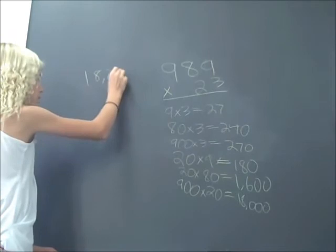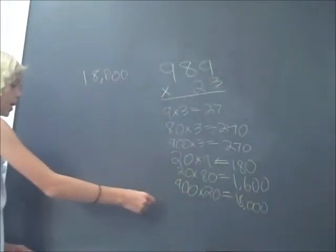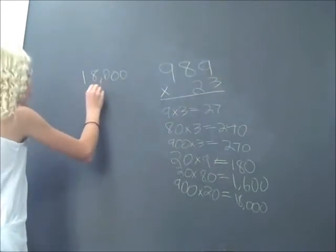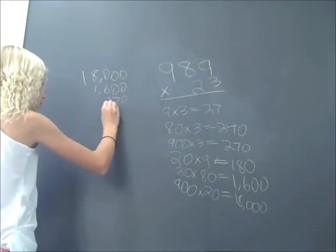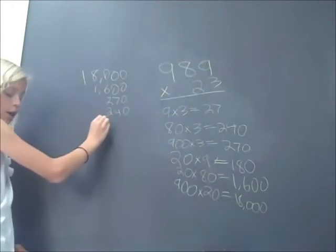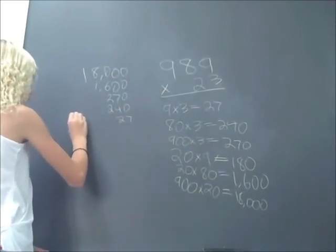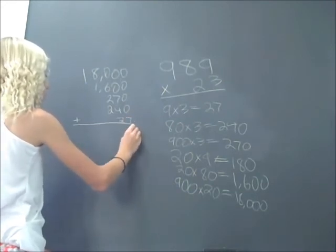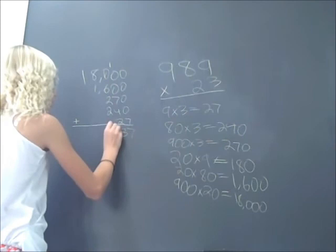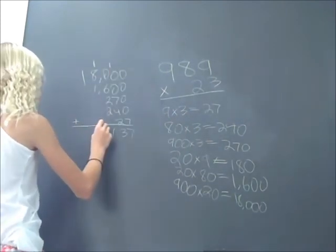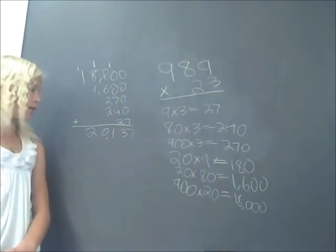First, 18,000. 18,000 is a product because it is the answer to a multiplication problem. And then you do 1,600, and then 270, and then 240. And all these are products too. And then after 240, you do 27. You add all these together, and your answer is 220,130.